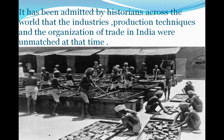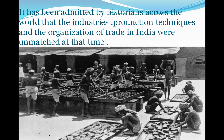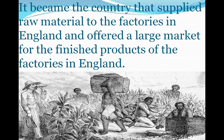This same country, India, became poor and bankrupt during nearly 200 years of British rule. It became a country that supplied raw material to the factories in England and offered a large market for the finished products of those factories. India just became a market from which they could take raw material to their country, because there the industrial revolution had started.